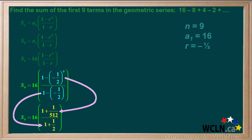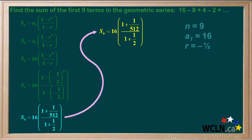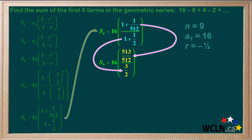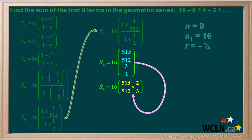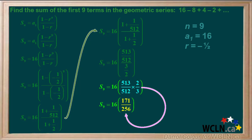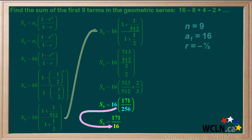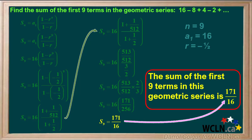1 minus negative 1 half to the 9th works out to 1 plus 1 over 512. And 1 minus negative 1 half is equal to 1 plus 1 half. 1 plus 1 over 512 is equal to 513 over 512, and 1 plus 1 half is equal to 3 halves. 513 over 512 divided by 3 halves is the same as 513 over 512 times 2 thirds, which simplifies to 171 over 256. 16 over 256 simplifies to 1 over 16. So the sum of the first 9 terms in this geometric series is 171 over 16.